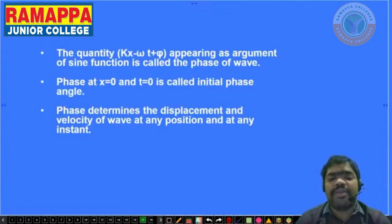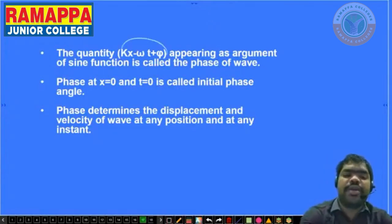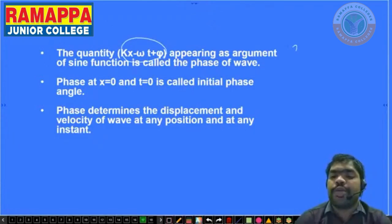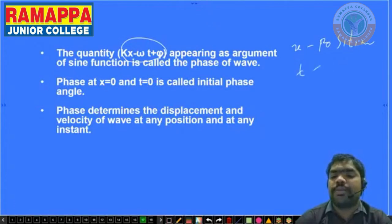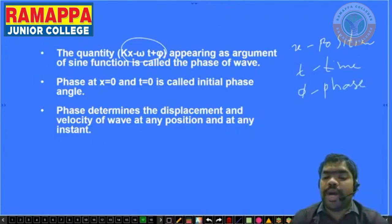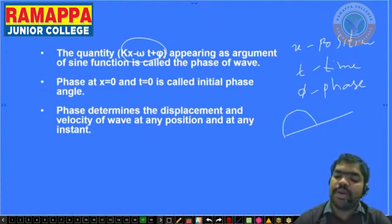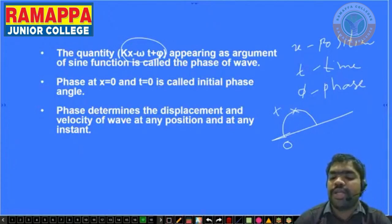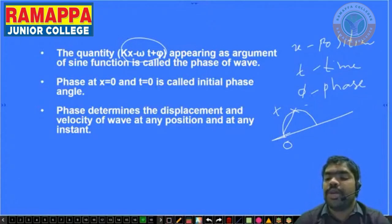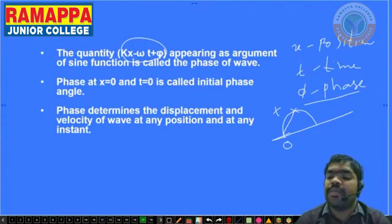The quantity kx − ωt + φ appearing as the argument of the sine function is called the phase. Here x is position, t is time, and φ is the initial phase. The phase represents how far the particle is from the starting point in a given direction at a given instant. The quantity kx − ωt + φ appearing as the argument of the sine function is called the phase of the wave.